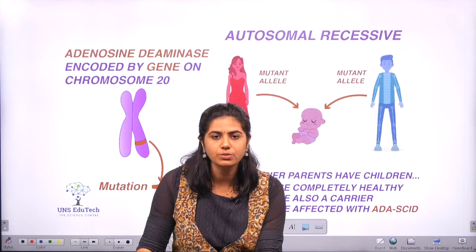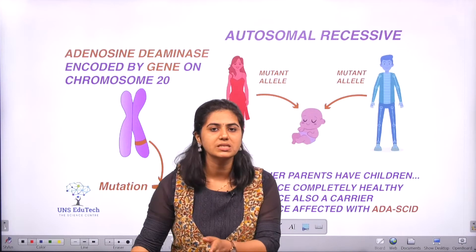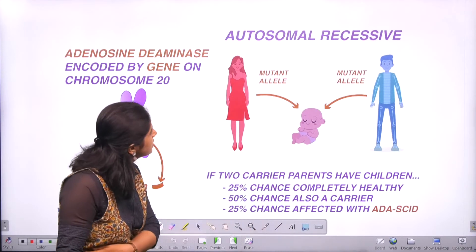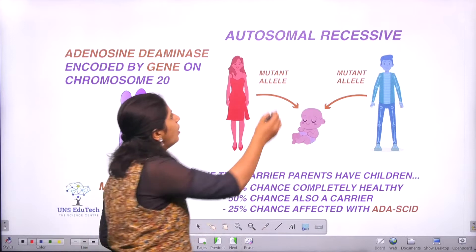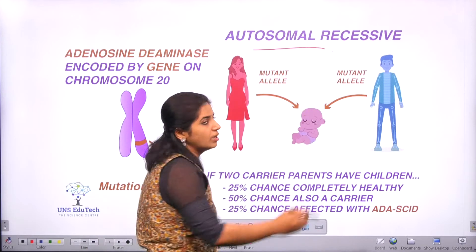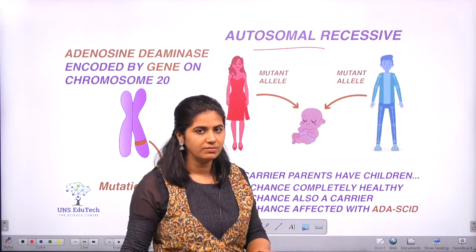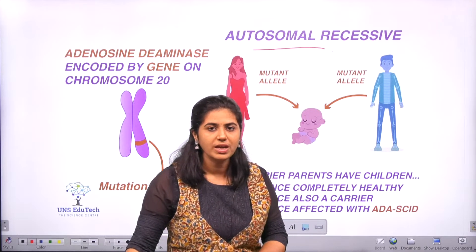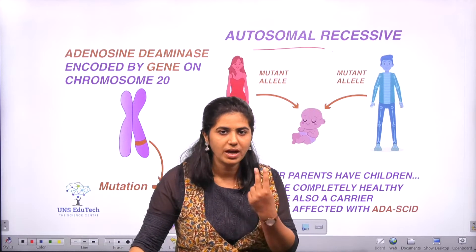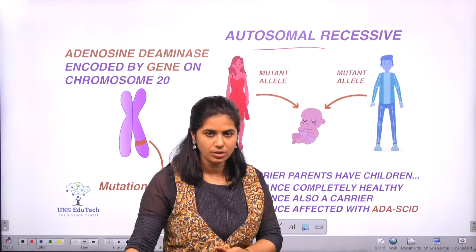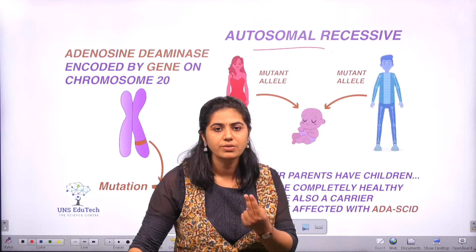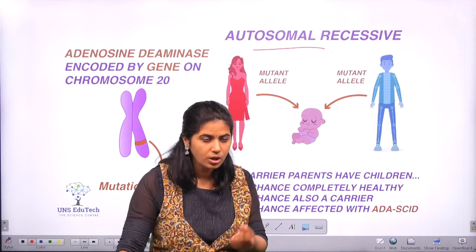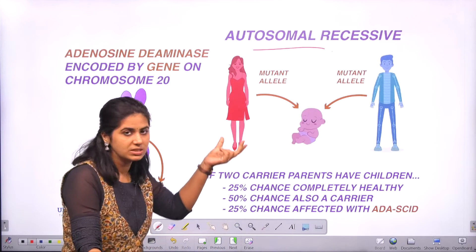Now let's discuss what adenosine deaminase is. Adenosine deaminase deficiency is an autosomal recessive disorder. As we discussed in sickle cell anemia, when we have two copies of the defective allele only, this trait will be expressed in a population.